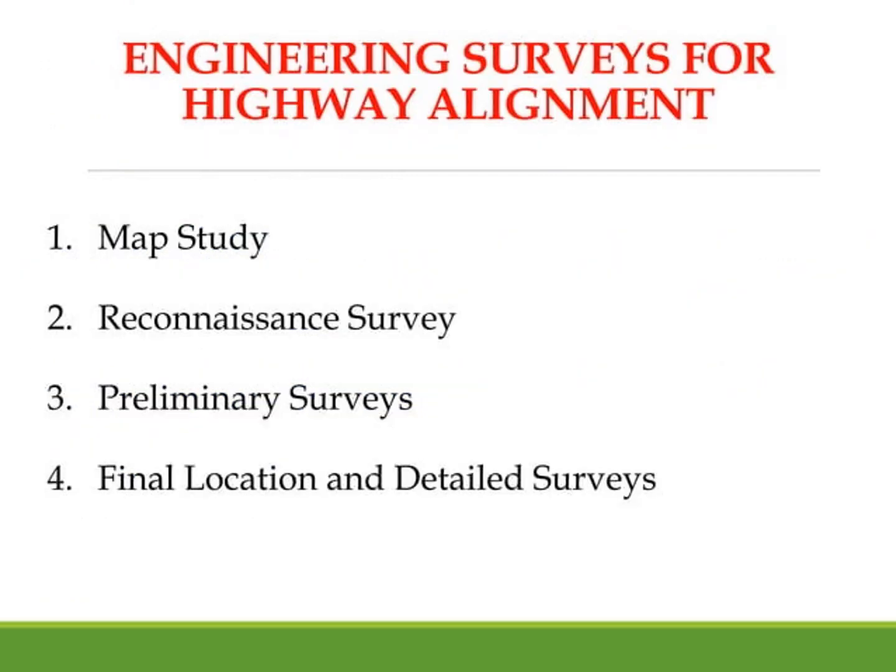The surveys carried out for highway alignment are: map study, reconnaissance survey, preliminary survey, and final location and detailed survey. Whether it is a modern method or a traditional method, we first analyze and study the map — understand how the area is, what the geometric features of the area are — and then do the reconnaissance survey, studying soil characteristics, followed by preliminary survey and final location and detailed survey.